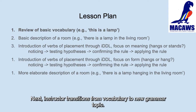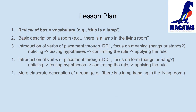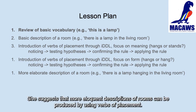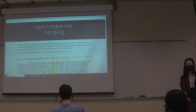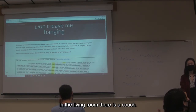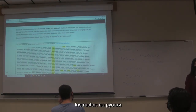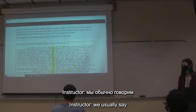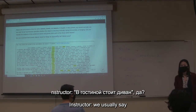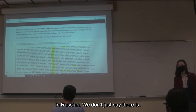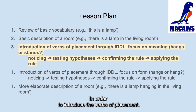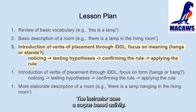Next, the instructor transitions from vocabulary to the new grammar topic. She suggests that more eloquent descriptions of rooms can be produced by using verbs of placement: 'Simply, we can describe an apartment by just saying: in the living room there is a couch. По-русски мы обычно говорим: в гостиной стоит диван, и лежит ковер. So we use verbs of position in Russian — we don't just say there is something.' To introduce the verbs of placement, the instructor uses a corpus-based activity.